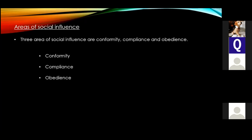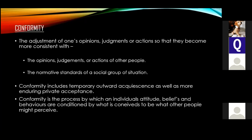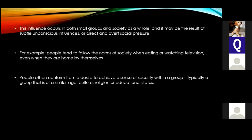Three areas of social influence are conformity, compliance, and obedience. Conformity is the adjustment of one's opinion, judgment, or actions so that they become more consistent with the opinions, judgments, or actions of other people and the normative standards of a social group or situation. Conformity includes temporary outward acquiescence as well as more enduring private acceptance, and it is the process by which an individual's attitudes, beliefs, and behaviors are conditioned by what is conceived to be what others perceive.